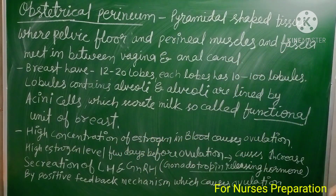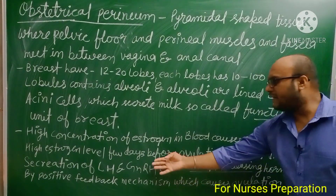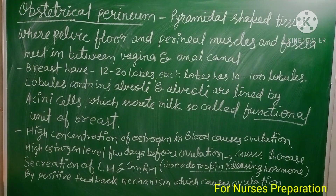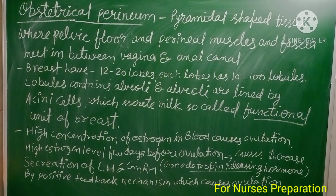High concentration of estrogen in the blood causes ovulation. High estrogen levels a few days before ovulation cause increased secretion of LH (luteinizing hormone) and GnRH (gonadotropin-releasing hormone) via a bio-positive feedback mechanism, which then triggers ovulation.